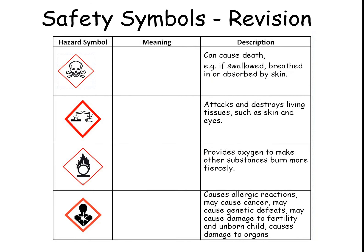On the next page of your booklet, you've got a table with different hazard symbols and descriptions. What I'm going to ask you to do is pause the video and fill in what they mean. For example, the first one has a skull and crossbones, and that means toxic — it can cause death if swallowed, breathed in, or absorbed by the skin. So pause the video and fill in the meaning of as many of these as you can. This should be revision from earlier modules in year seven. Pause the video now.